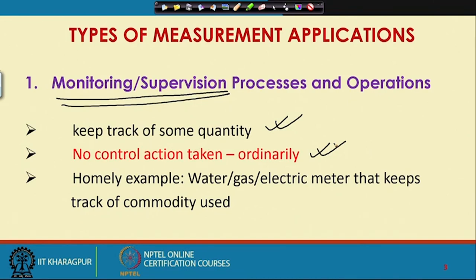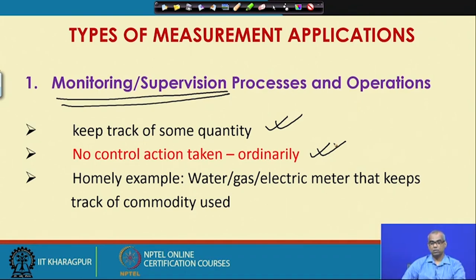Monitoring essentially keeps track of some quantity. No control action is taken ordinarily. A good example is your water meter, gas meter, or electric meter — these meters keep track of the commodity you have used. The electric meter keeps track of the amount of electricity you are consuming; it does not tell you while you are using it whether you are using more or less. It simply monitors. A control action will not usually be taken for the monitoring purpose.